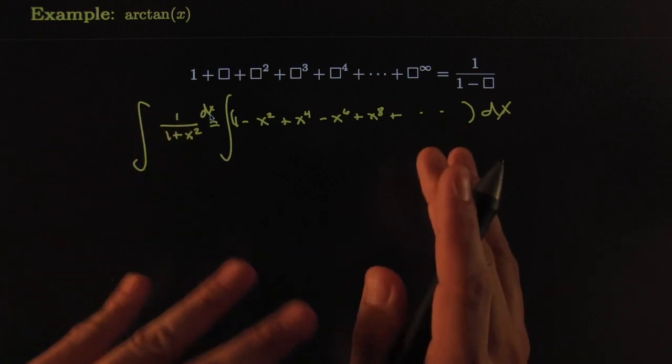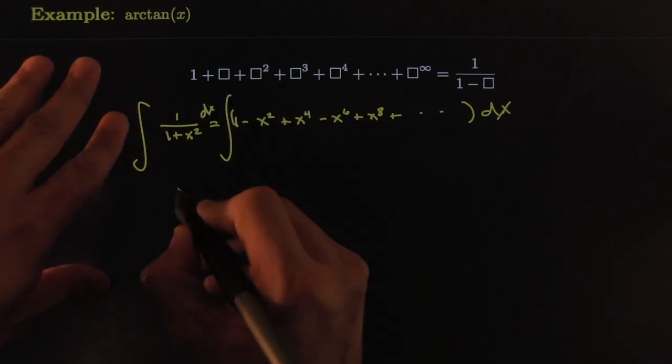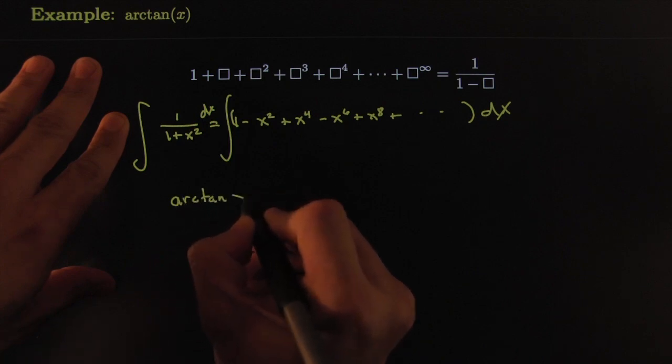We'll cross that bridge when we get there. For now, what if you could take the integral on both sides? We'd have to say, well, the integral of this is arctangent, arctangent of x as a matter of fact.